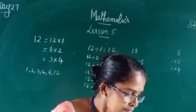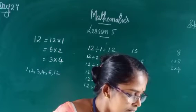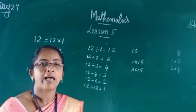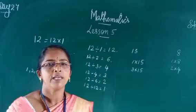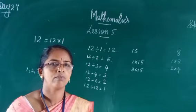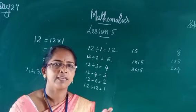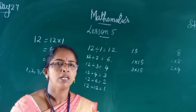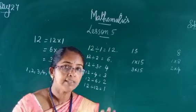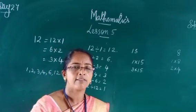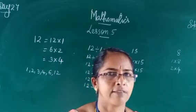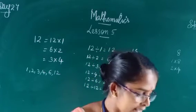Every number has at least two factors, except one. One has only one factor, that is 1 itself. All other numbers have at least two factors: 1 and that number itself.